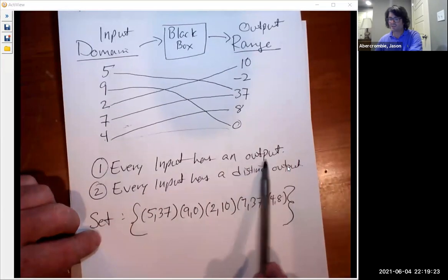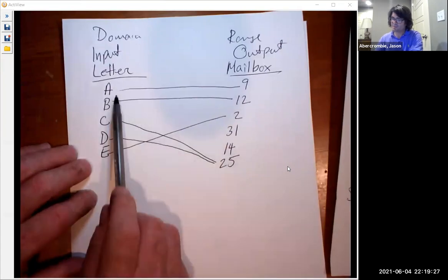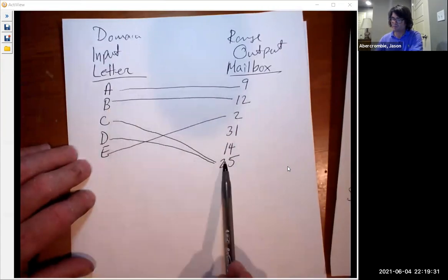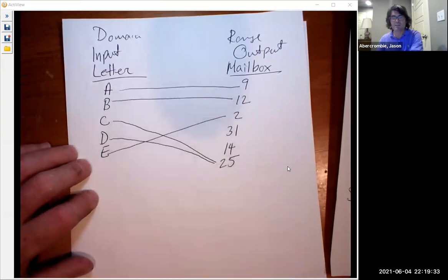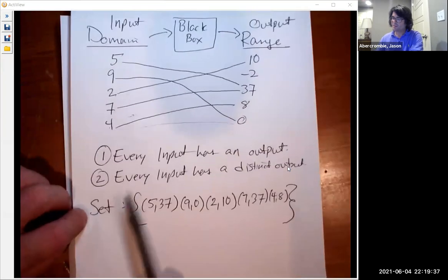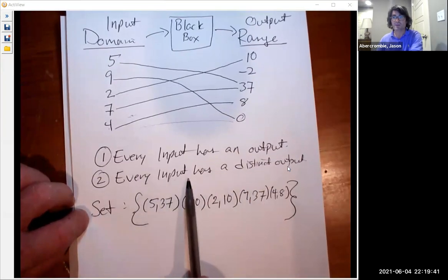So first of all, every input goes to an output. Every letter goes to a mailbox. That is true. A goes to nine, B goes to twelve, C goes to twenty-five, D goes to twenty-five, E goes to two. Okay, every letter goes somewhere. The second requirement is that every input has a distinct output. That means every letter just goes to one mailbox.